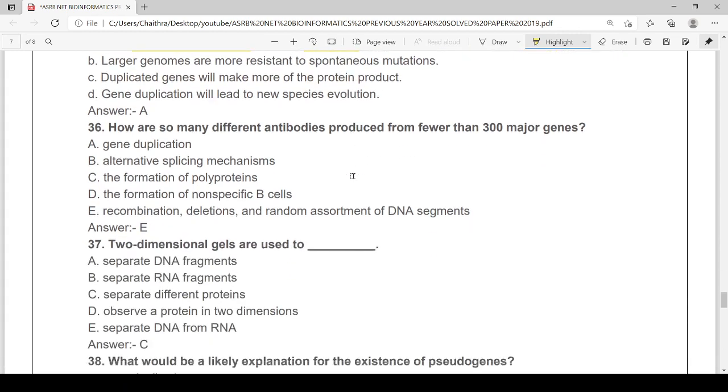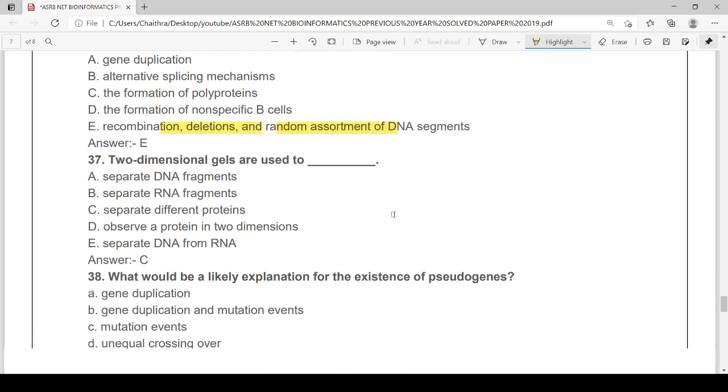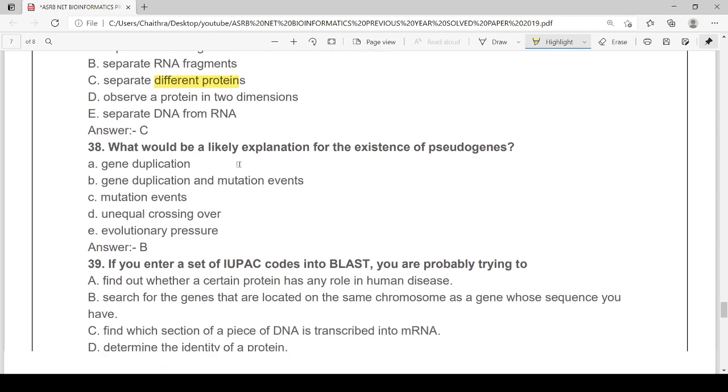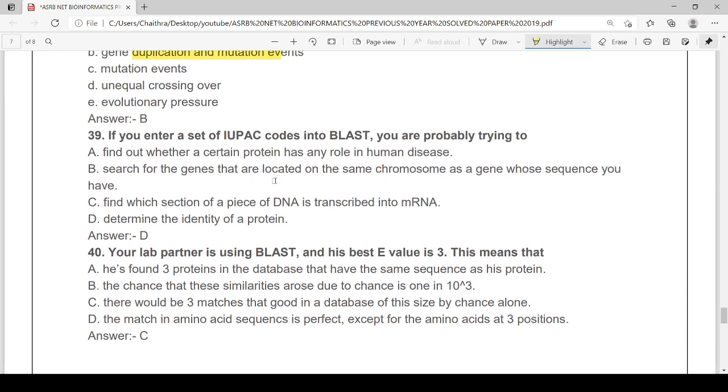How are so many different antibodies produced from very few, that is, less than 300 major genes? It is recombinations, deletions, random assortment of DNA segments. Two-dimensional gels are used to separate the different proteins. What would be the likely explanation for the existence of pseudogenes? Gene duplication and mutation events. If you enter a set of IUPAC codes into BLAST, you are probably trying to determine the identity of the protein, option D.